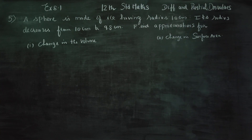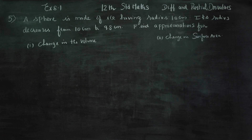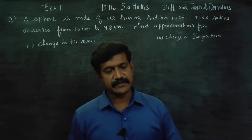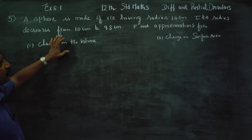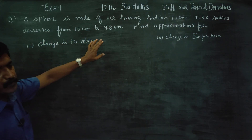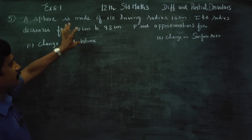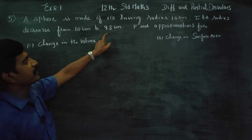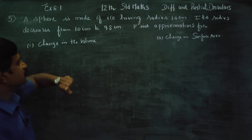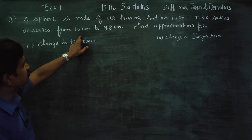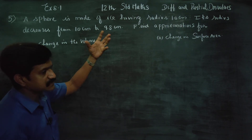Dear 12th standard students, in Exercise 8.1, sum number 5, a sphere is made of ice having radius 10 centimeter. Its radius decreases from 10 centimeter to 9.8 centimeter. 10 is the original radius, and 9.8 is the decreased radius.